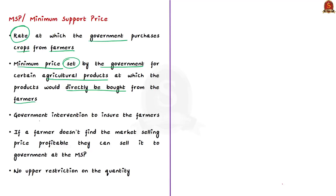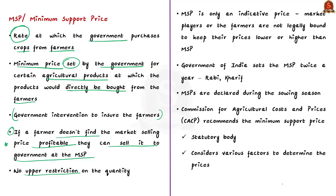MSP is a form of government intervention to ensure farmers are protected. For example, if there comes a situation where there is a steep decline in the prices of their produce in the market, farmers cannot sell their produce at a profit. To help offset this loss, the government introduced the concept of MSP. Even in cases where a farmer doesn't find the market selling price profitable, he can sell to the government at the MSP, and there is no upper restriction on the quantity. MSP is only an indicative price — market prices can rise way above or fall way below MSP. Market players and farmers are not legally bound to keep their prices lower or higher than the MSP; it is up to the farmer's discretion whether to sell to the government or the market.